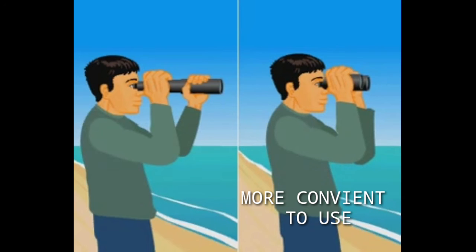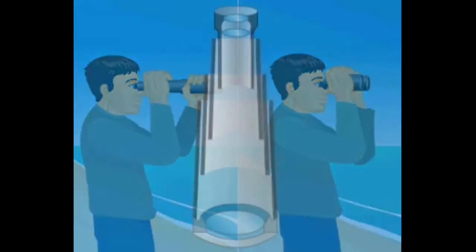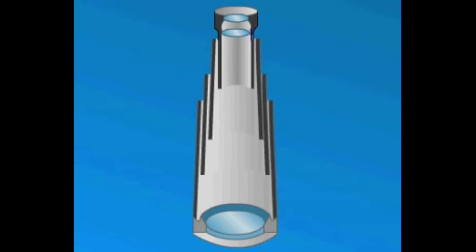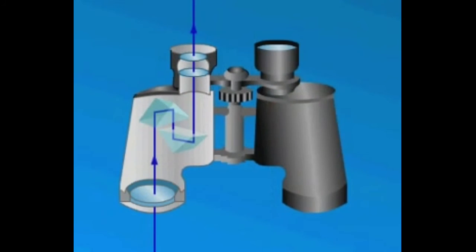The length of a refracting telescope is determined by the sum of the focal lengths of the objective lens and the eyepiece lens. In binoculars, on the other hand, the path of the rays is reversed twice as a result of reflections within the prisms. In this way, the required distance between the objective lens and the eyepiece lens can be shortened.